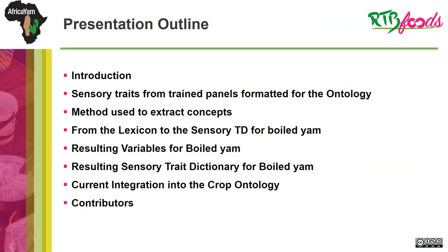The presentation outline is as follows: we shall have an introduction; we shall look at the sensory traits from trained panels formatted for the ontology; methods used to extract concepts; how you get a sensory trait dictionary from the lexicon; the resulting variables and an example of boiled yam; the resulting sensory trait dictionary and an example of boiled yam; and the current integration into the crop ontology and the contributors to this work.